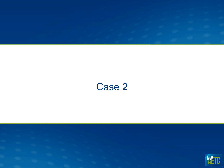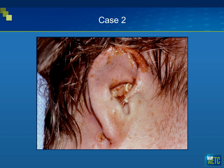Moving on to case two. I've got three photographs of three men with the same disorder who presented with very similar clinical histories. This individual has a CD4 count less than 100 and presents with a chronic lesion on his right ear. At the top of the ear, he has these erosions that have developed, and you can see similar findings in the posterior region of the ear.